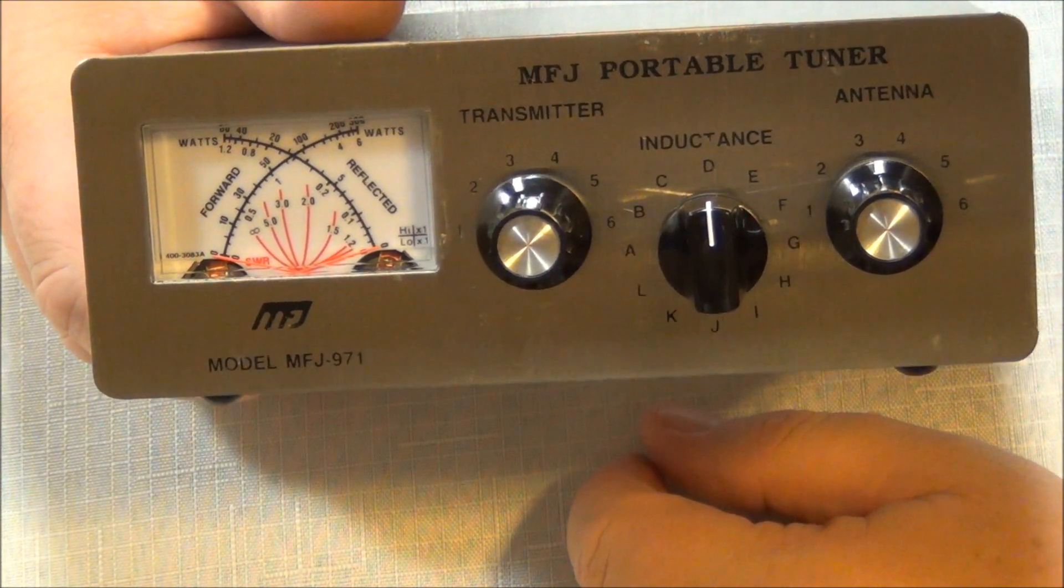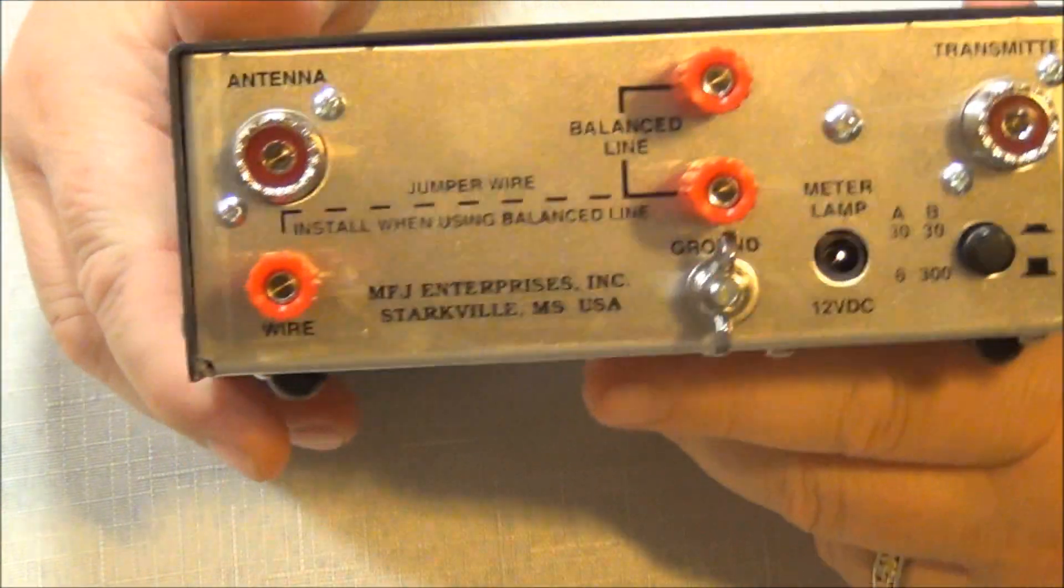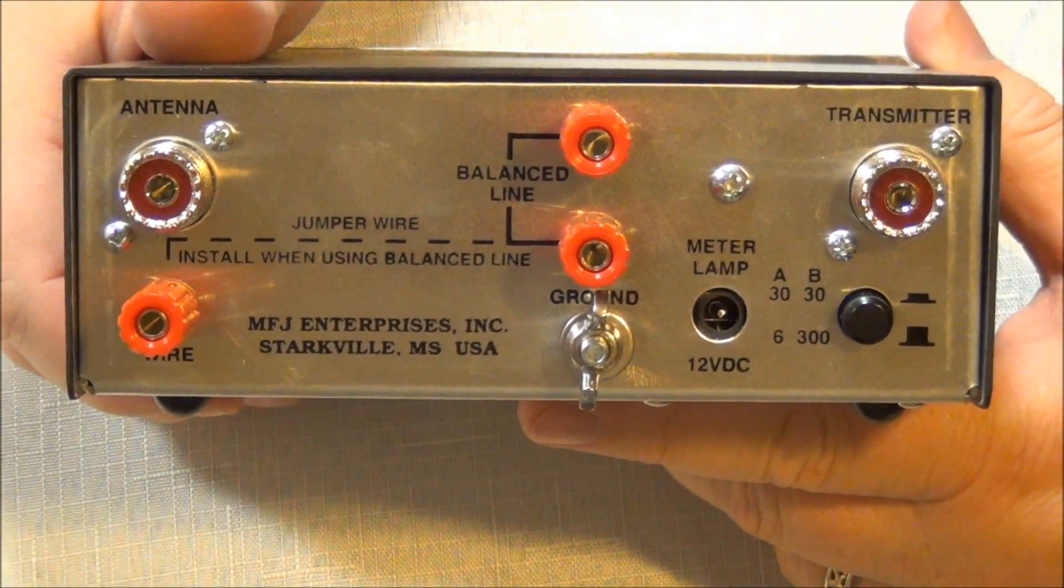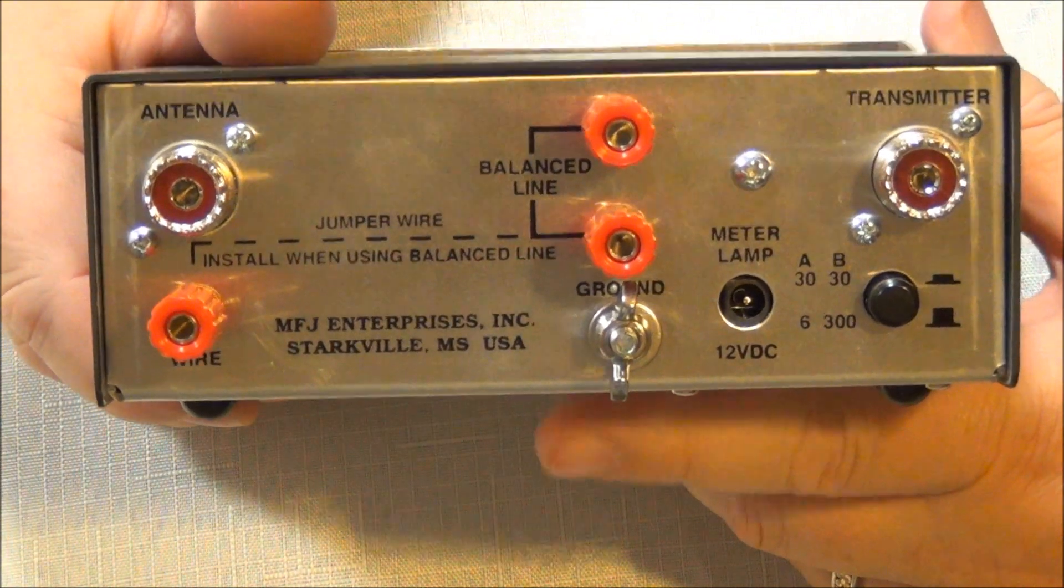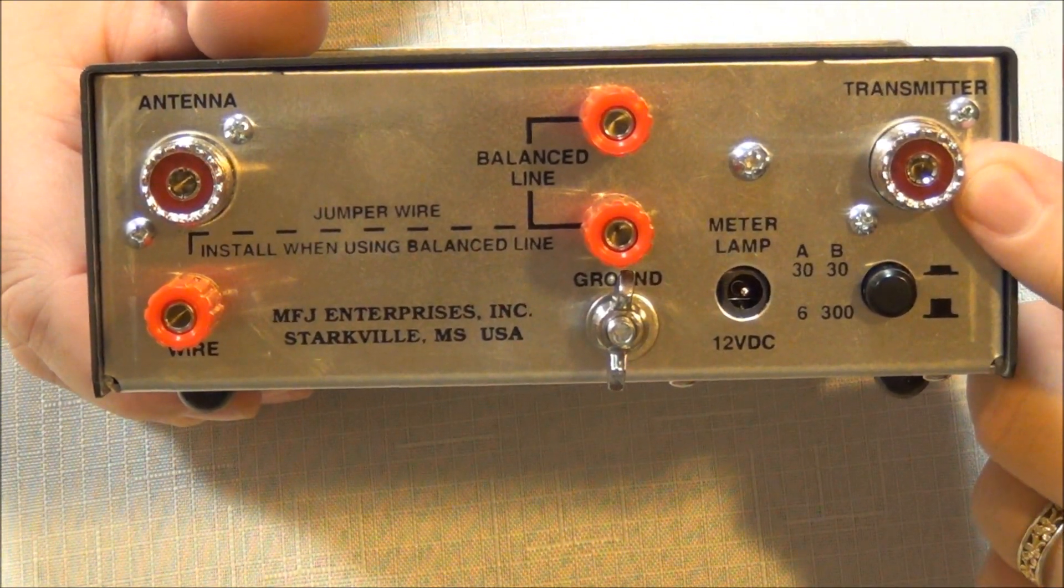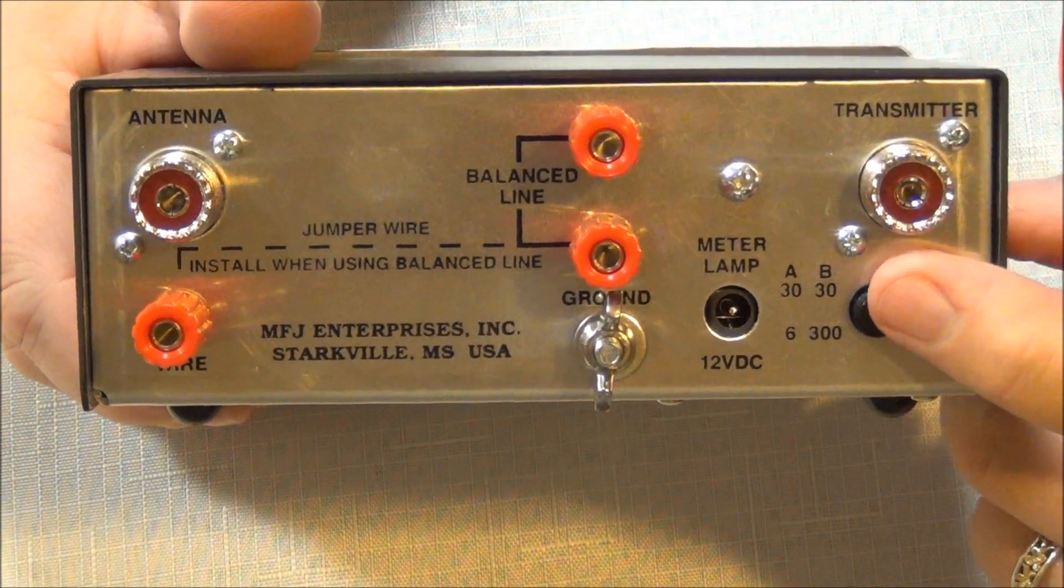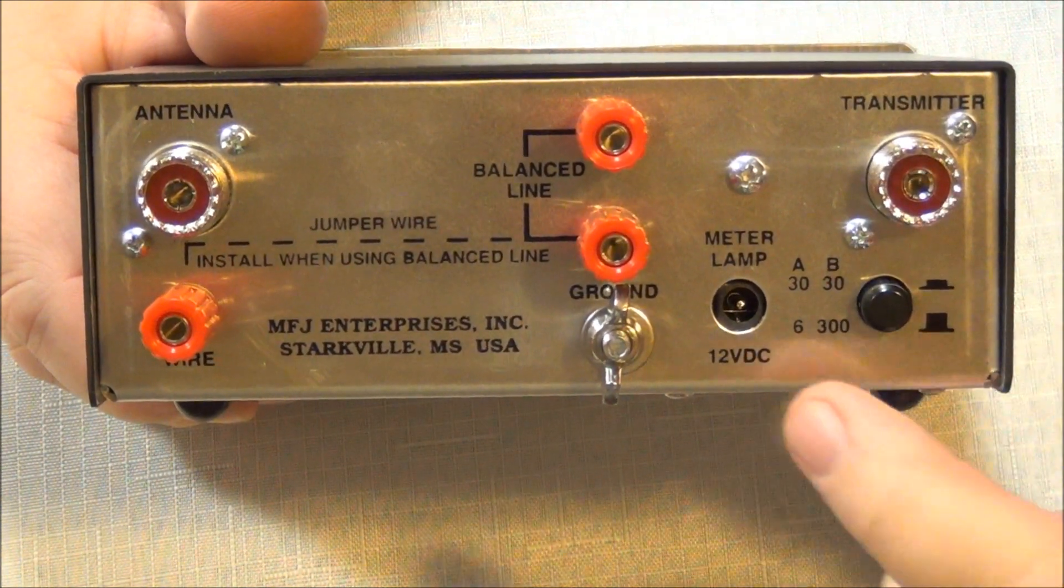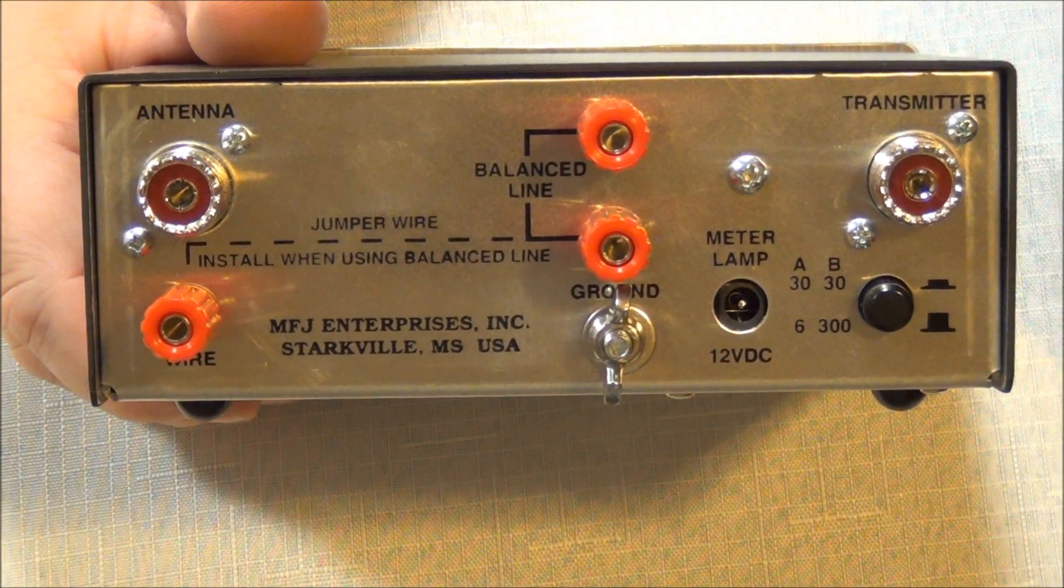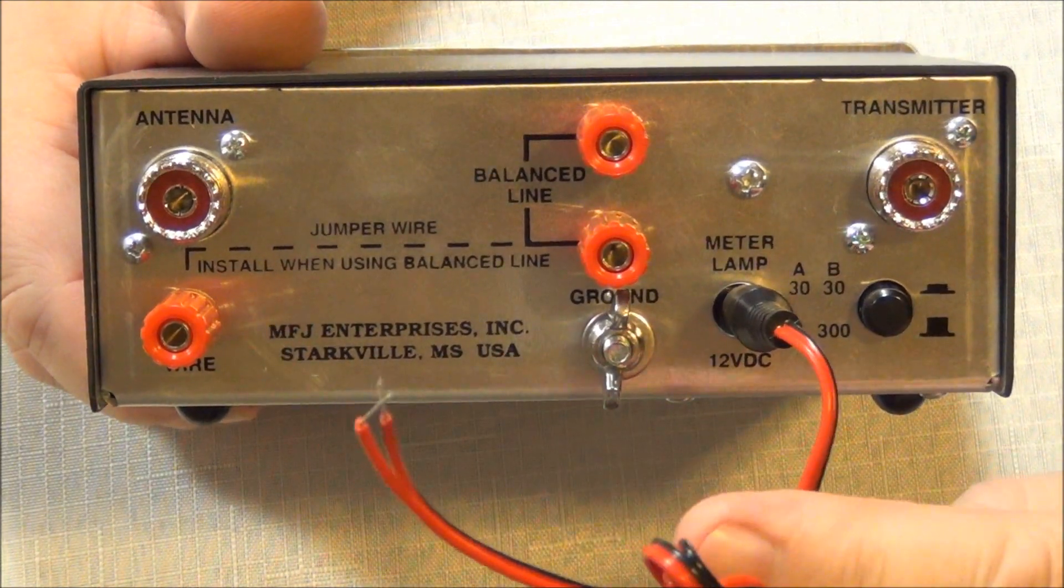Okay, let me show you the back of the unit. This is the back of the antenna tuner and you have your transmitter in, you have an AB switch for your power level, your lamp meter or the meter for the lamp, and that just plugs in right there, 12 volts.